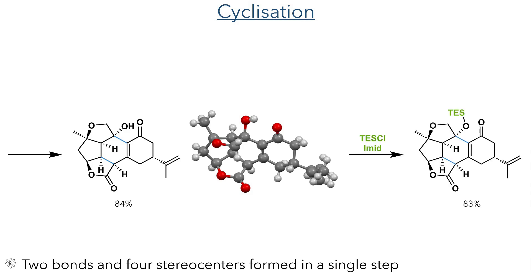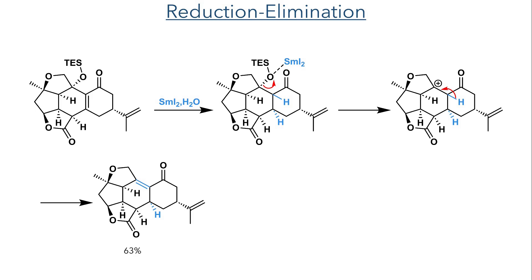With this cyclisation now complete, the newly formed alcohol was protected as a TES group and was then taken forward to a reduction-elimination step. The molecule was reacted with samarium iodide, which first reduces the carbon-carbon double bond of the enone and then coordinates to the TES-protected hydroxyl group. This promotes an E1 elimination, where the oxygen is first eliminated, forming a stabilised tertiary carbocation, and then the proton alpha to the ketone eliminates, forming an enone in a 63% yield.